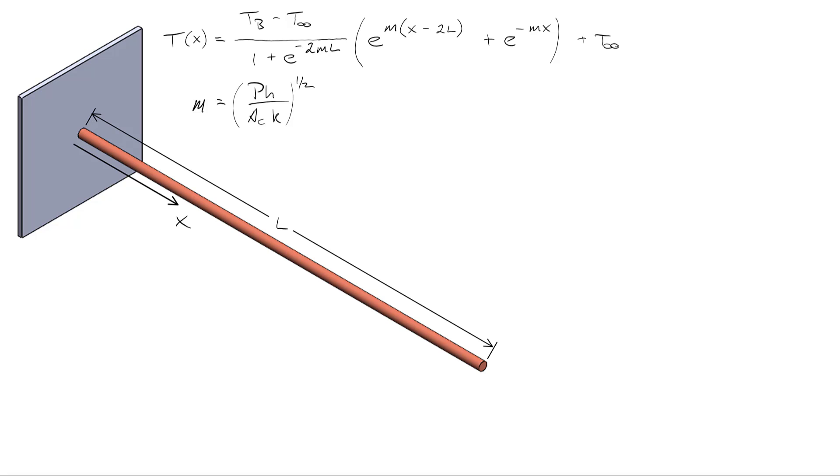In a prior screencast, we derived the temperature profile for a fin, assuming that we know the base temperature and that the tip itself is adiabatic. In this screencast, I want to talk about the whole purpose of the fin, which is to remove heat from a surface, and we want to figure out what QF is, which is the rate at which the fin is pulling heat from the surface in watts.